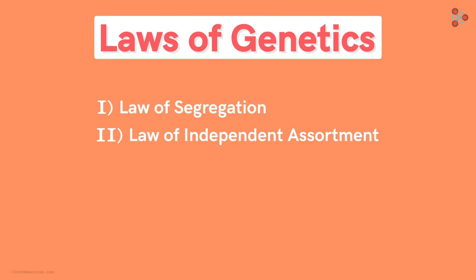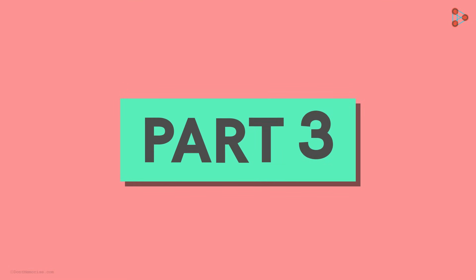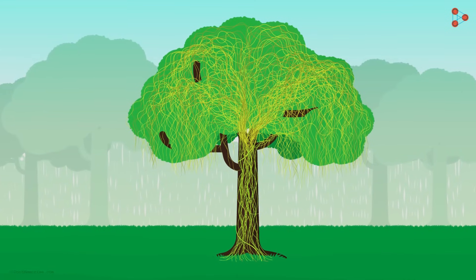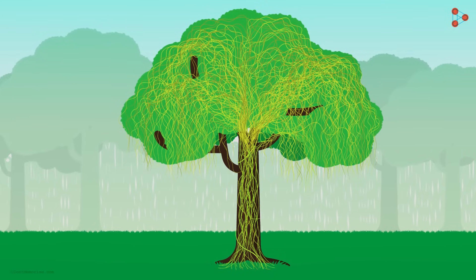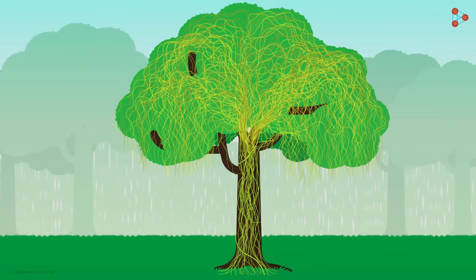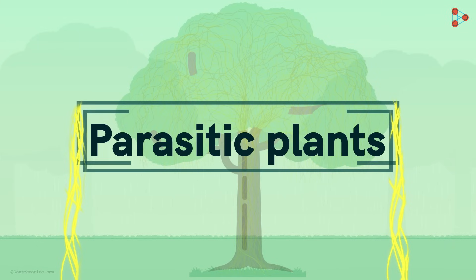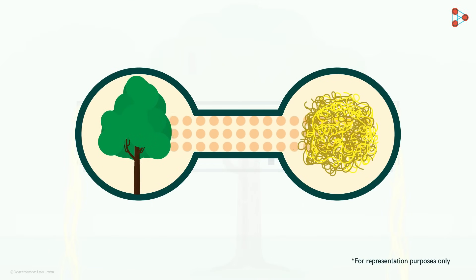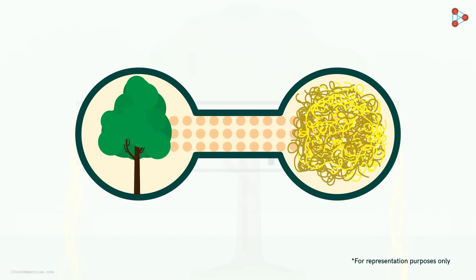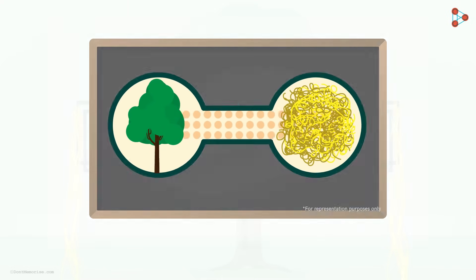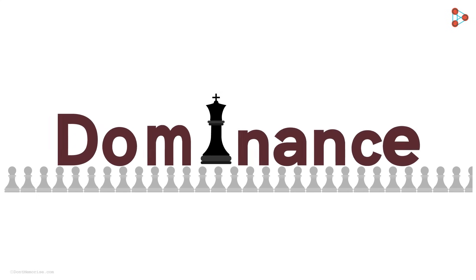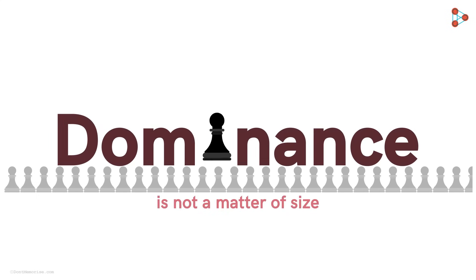Now that we are well versed with the first two laws of genetics, let's have a look at the third law. A scene of lush green trees covered with yellow or brown mesh is not new to us — these are parasitic plants that derive all nutrients from the host and grow to form a huge structure, overpowering large trees. This is one of the best examples for understanding the fact that dominance is not a matter of size; rather, it is the nature of the dominating component that matters.